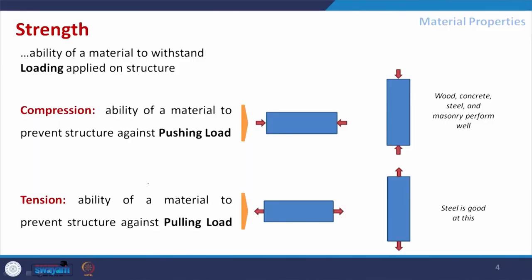Compressive strength is the ability of a material to resist pushing load. For example, when I push this pen with my finger, it will try to compress. For tensile strength, it is the pulling force — when we try to pull the pen apart, that is the pulling load applied on it. Depending on the material and its physical characteristics, the limit to resist compression or tension will vary.